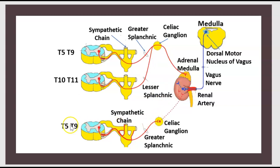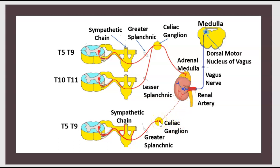In this circuit, there is a connection — a synapse — in the ganglion. For the pathway to the adrenal medulla, there is no synapse in the ganglion. The greater and lesser splanchnic nerves go to the celiac ganglion and then to the medulla without a synapse there. For the pathway to the kidney via the sympathetic chain from T5 to T9, there is no synapse in the celiac ganglion. For the parasympathetic component coming from the medulla, the dorsal motor nucleus of the vagus follows the vagus nerve to the renal artery.